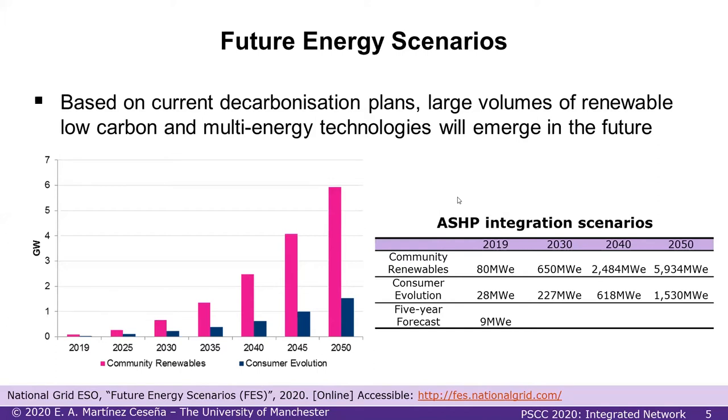I'm highlighting two of the future energy scenarios for the UK, which show that we're likely going to have high integration of electrified heating — in this case, air source heat pumps. These scenarios also include other technologies like hydrogen. The country and the world are recognizing that we need these technologies to decarbonize the energy system and make it more efficient — basically to tackle the energy trilemma: affordability, sustainability, and resilient systems.